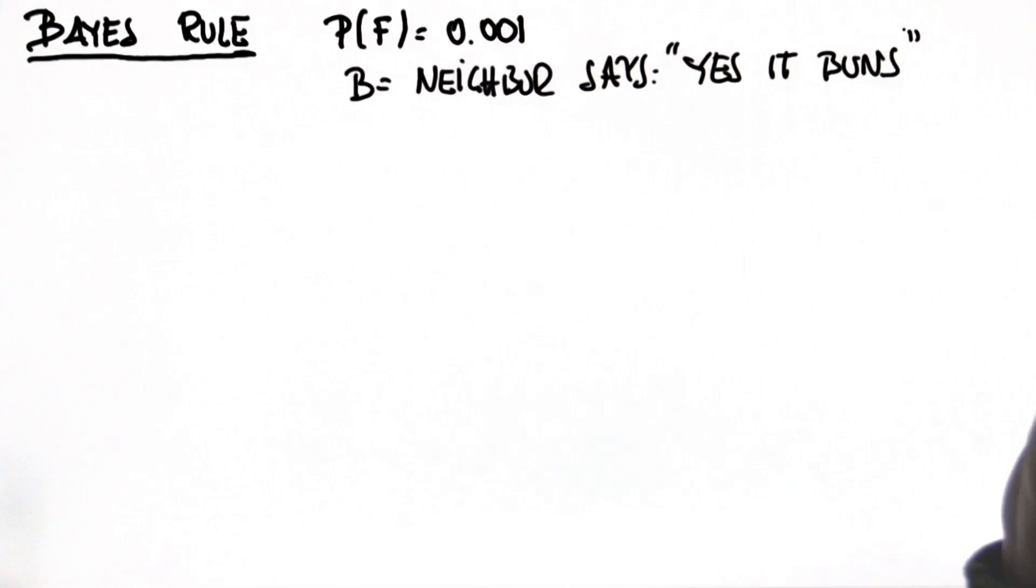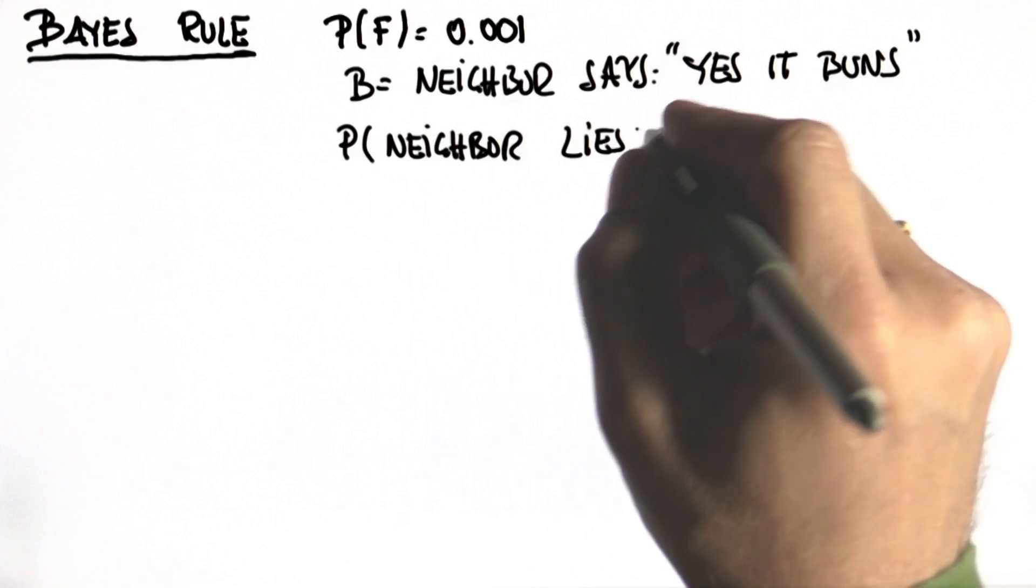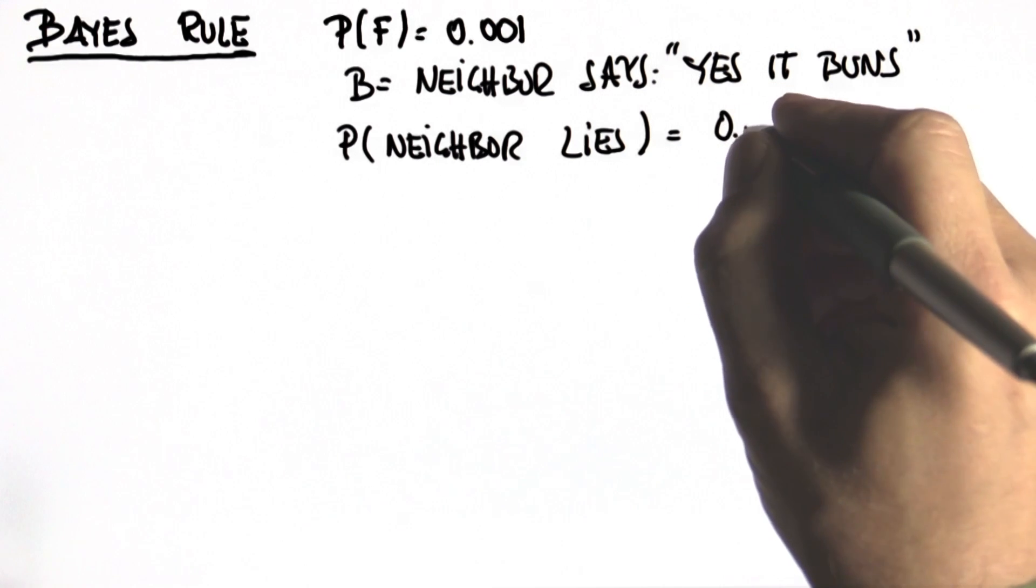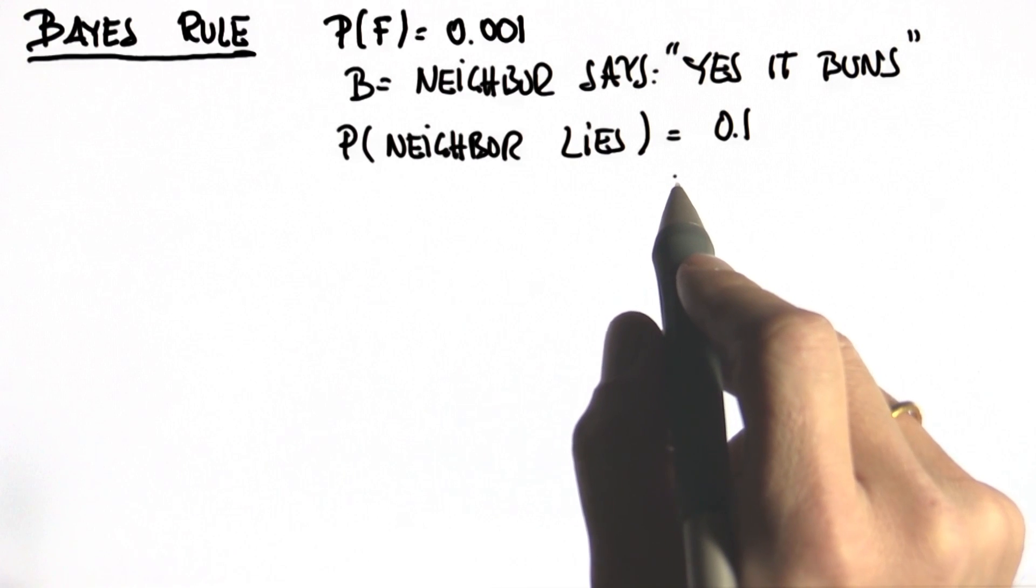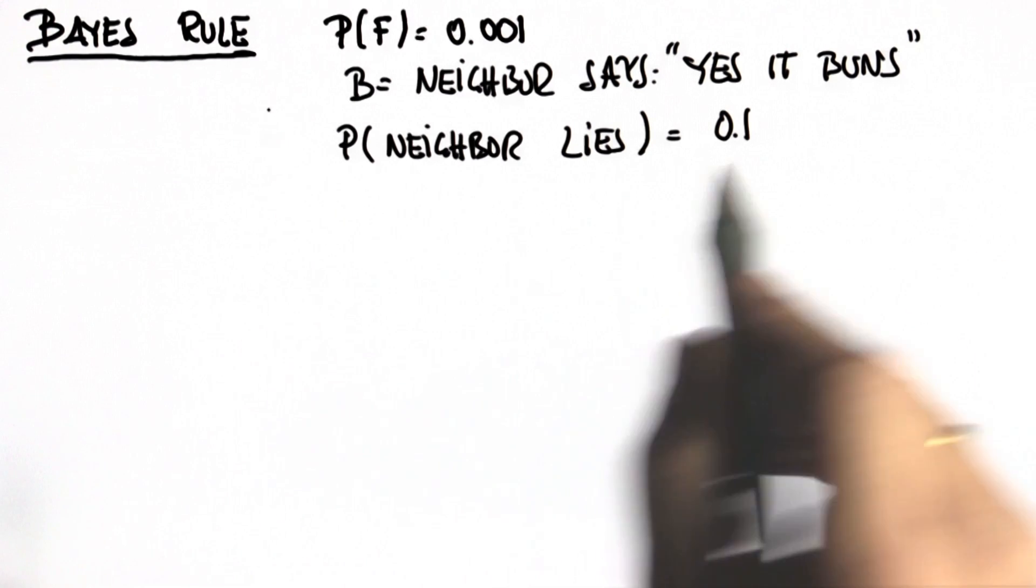So B, you happen to know that the neighbor is not very truthful. In fact, every time you ask him a question, there's a 0.1 chance, a 10% chance, the neighbor will produce a lie, and a 0.9 chance the neighbor speaks the truth. So you ask him exactly one question, does my house burn? He says, yes, it burns.